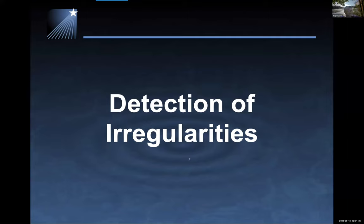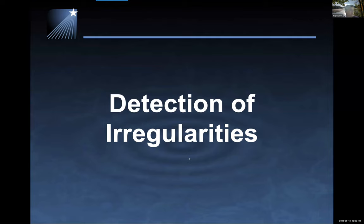Now we're on to the detection of irregularities — these are steps to be taken at both the state and local level to monitor assessment administration and to detect, notice, or report any irregularities that may threaten the validity of results. If you're not sure, report it. We have anonymous tip lines, and you can also reach out and we can help you make those decisions.